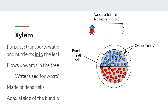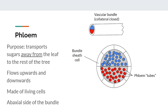The primary purpose of phloem is to transport the sugars produced by photosynthesis away from the leaf to all other parts of the plant to use as food. Since leaves are around the middle to top of the tree, the sugars it is transporting need to be able to go upwards and downwards to reach all parts of the tree. In a vascular bundle inside a leaf, the phloem will be on the abaxial or lower side.